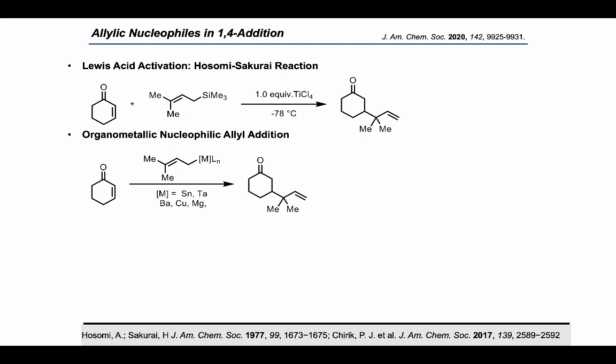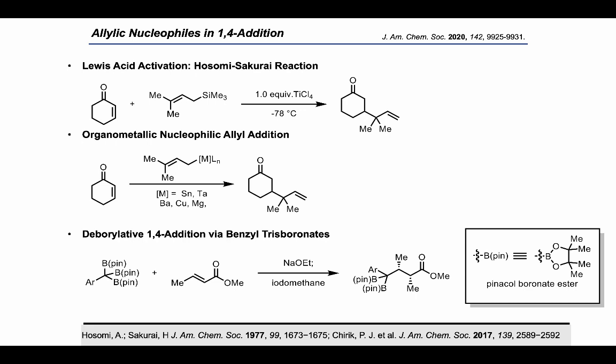An interesting report came out by the Chirik lab in 2017 which described the use of benzyltrisboronate esters in deboronative 1,4 additions. This takes advantage of a heavily stabilized carbanion, and these works combined inspired our lab to leverage our experience in 1,1-organodiborons and stereoselective methodologies to develop a stereoselective conjugate addition reaction to form vicinal tertiary and all-carbon quaternary stereocenters in a concise and operationally simple method to rapidly generate molecular complexity.